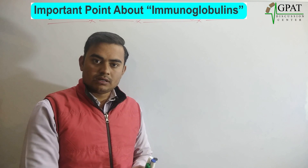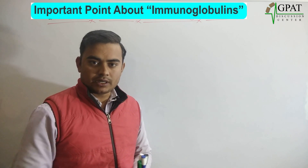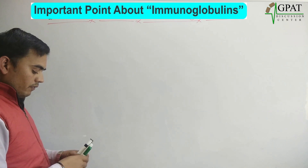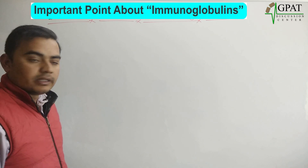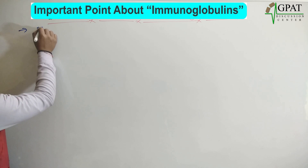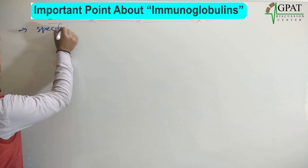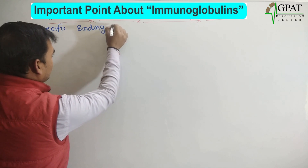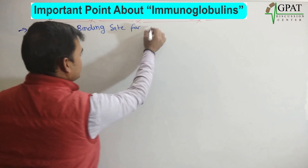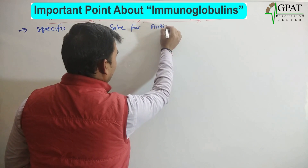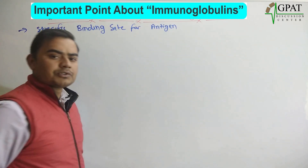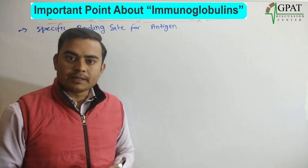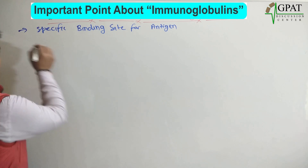In this topic, one question is very important, so make sure you listen carefully. When we talk about immunoglobulins, immunoglobulins are the specific binding site for antigen. When any new antigen comes to our body, it binds to the immunoglobulins. So immunoglobulins are the antibodies of our body.